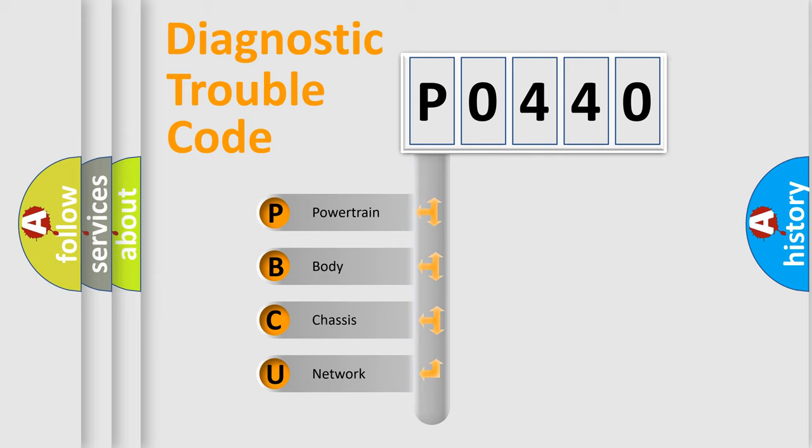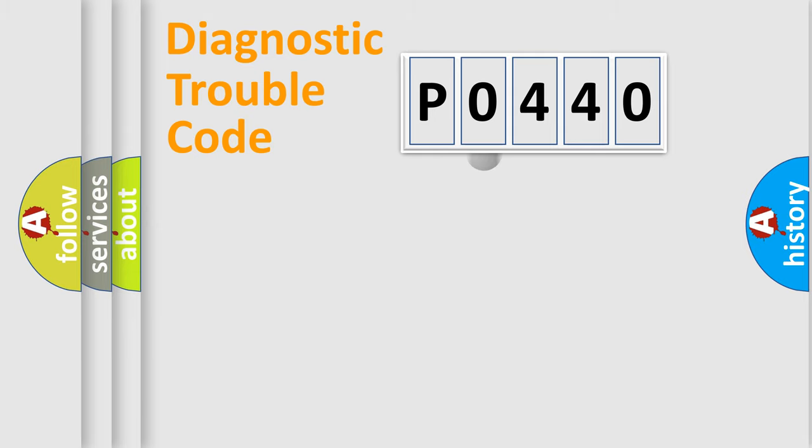We divide the electric system of automobile into four basic units: powertrain, body, chassis, and network. This distribution is defined in the first character code.